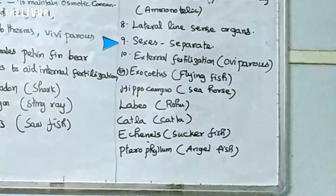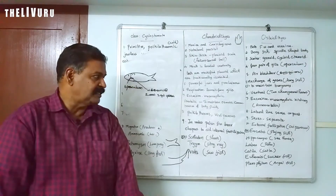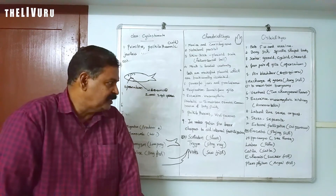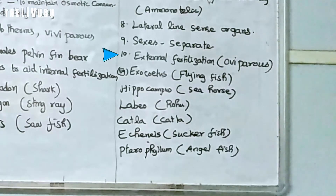In Osteichthyes, the sexes are separate — male and female fishes are found separately. Fertilization is external.